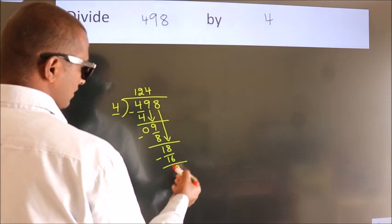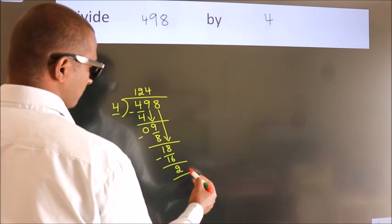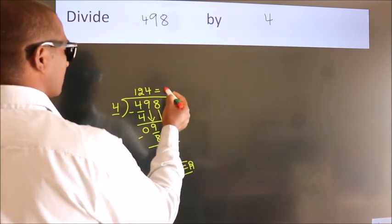After this, no more numbers to bring down, so we stop here. This is our remainder. This is our quotient. The answer we get is 124 with remainder 2.